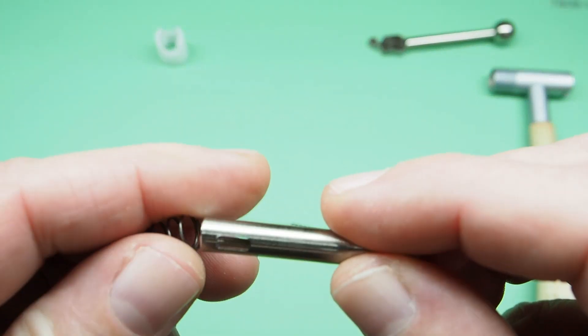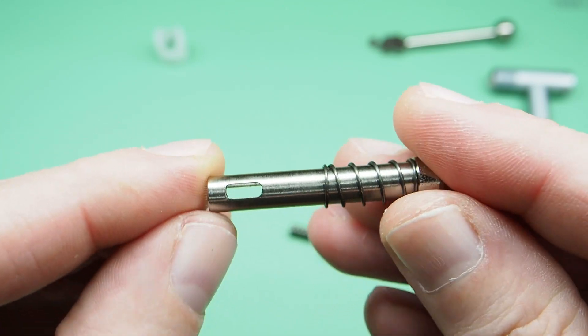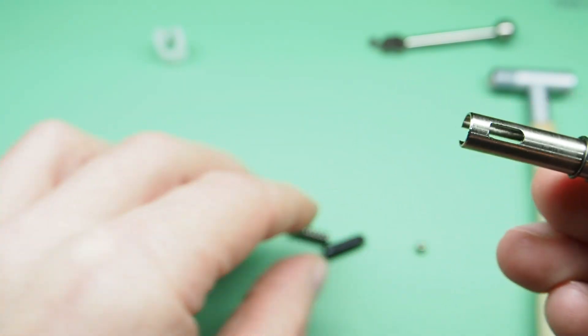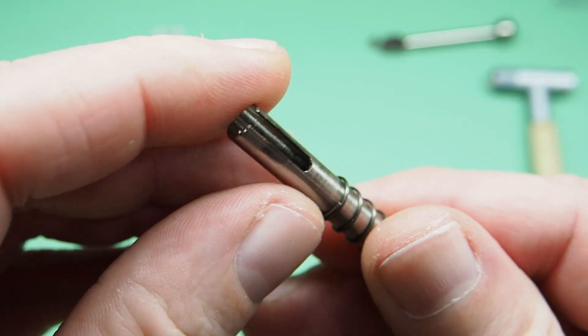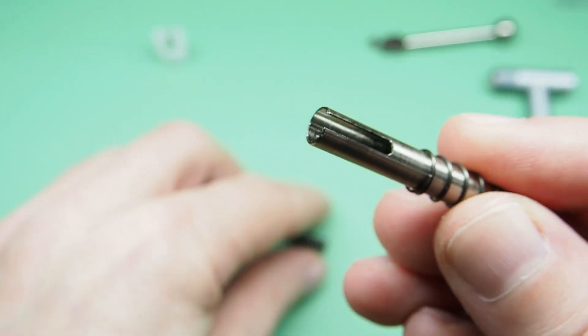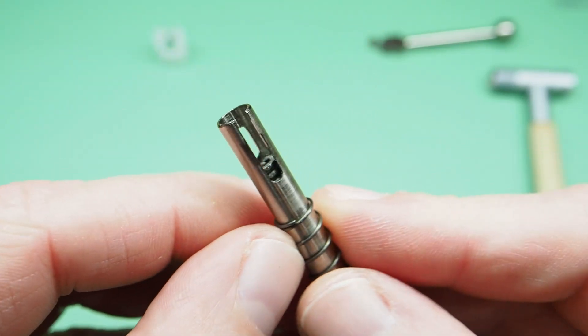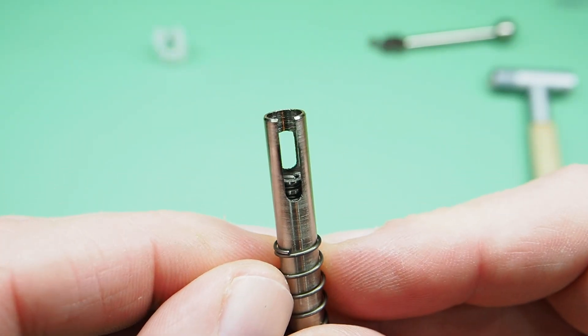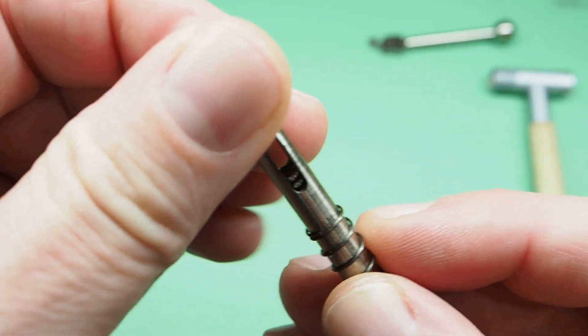To assemble it, we can start with this spring, followed by the collet. Now the spring. And finally the ball bearing.